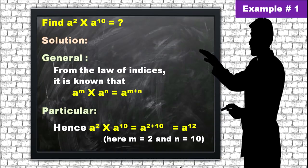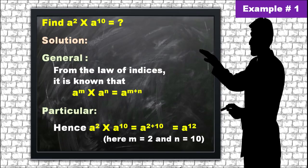Here are examples of the deductive method. The deductive method moves from general to particular. We take a general formula directly. For example, I want to prove a² × a¹⁰. We know the formula — the law of indices: a^m × a^n = a^(m+n). We already know this general formula. Applying it: a² × a¹⁰ = a^(2+10) = a¹², where m = 2 and n = 10. In this manner, this is what is called the deductive method.